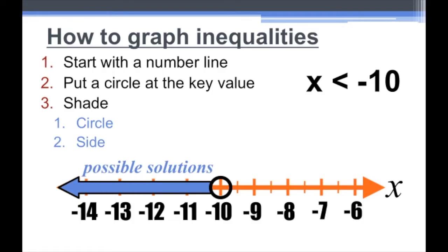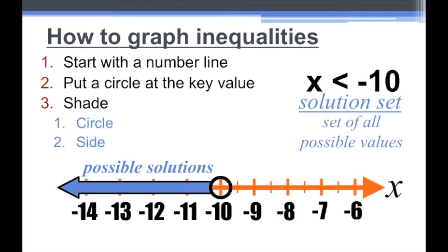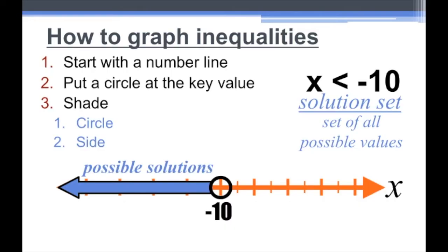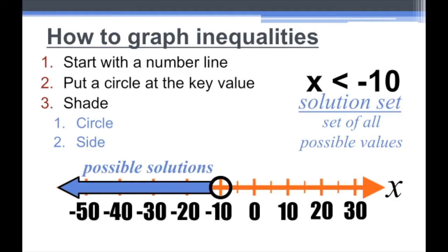What we do is shade an arrow to the left of negative ten. That tells us every single number to the left of negative ten is a possible solution. This inequality, x is less than negative ten, is actually a solution set — it gives you the set of all possible values that satisfy the inequality. It doesn't matter if you go by ones, fives, or tens on your number line. As long as you have your key value set up, a circle at that key value, and shade in the proper direction, you'll have the correct inequality graph.